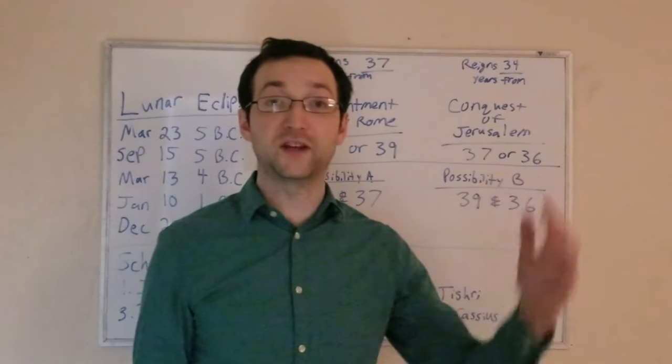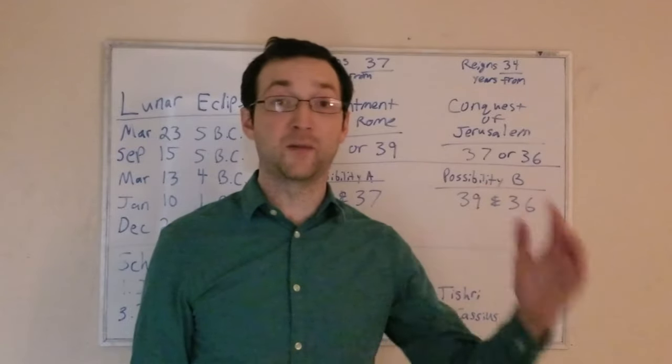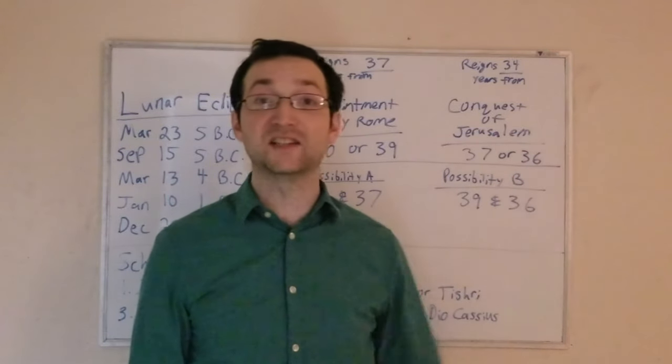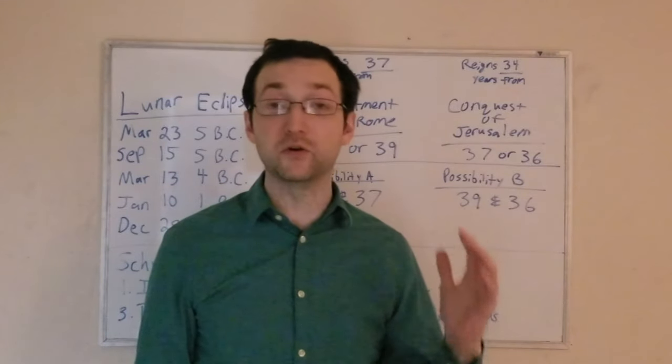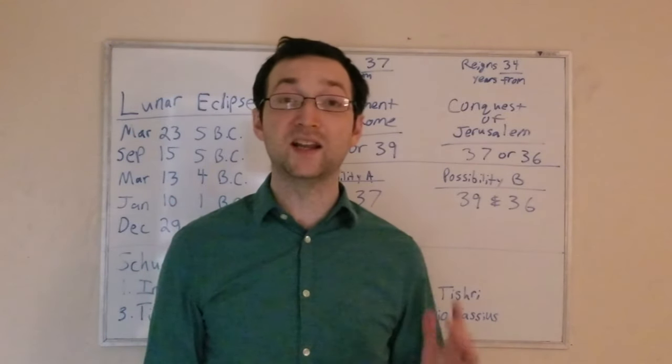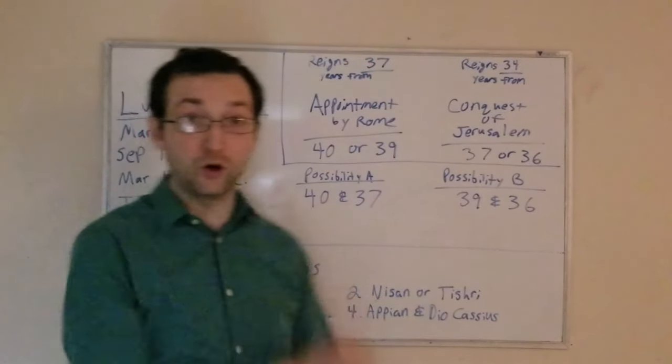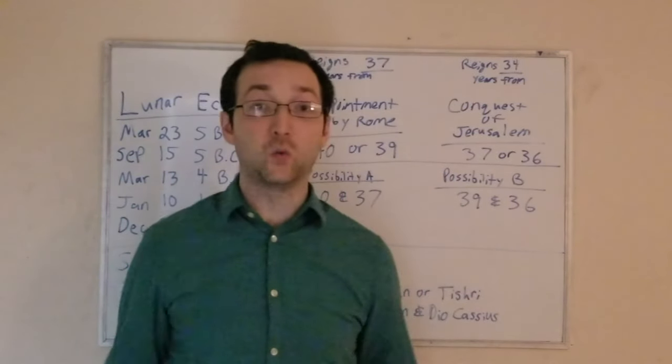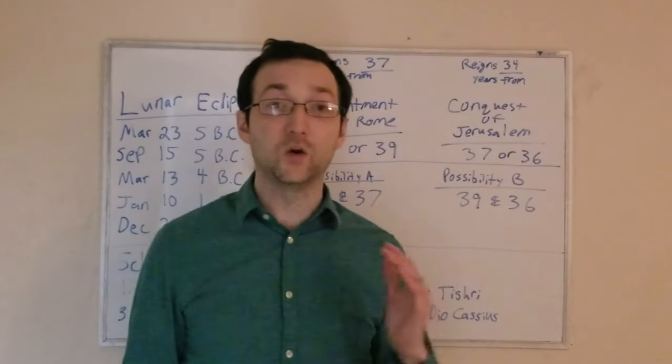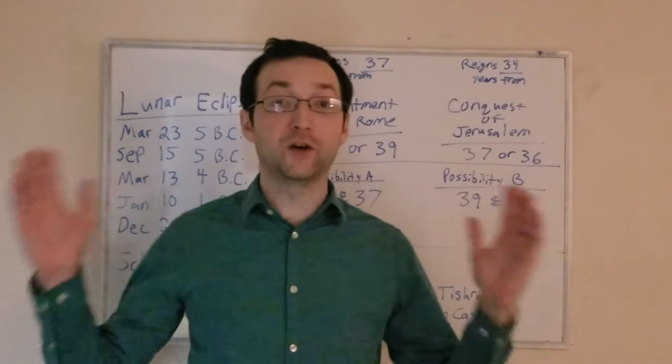First, inclusive counting. This is absolutely central to the Shurer Hypothesis. This isn't just an ancillary nice-to-have. The entire hypothesis comes crumbling down if we do not use inclusive counting. There's no way to get Herod to his 37th year, even at the earliest possible date for his appointment by Rome and dead in 4 BC. We have to have inclusive reckoning in order to get Shurer's hypothesis to work. Well, what evidence do we have in favor of either?